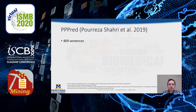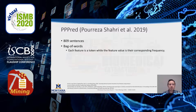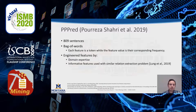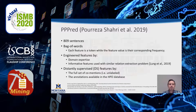We previously implemented PP-PREP, a supervised model for classifying co-mentions of proteins into two classes of good and bad. We manually annotated 809 sentences and used a list of features including bag-of-words features, engineered features by domain expertise, and distantly supervised features from unlabeled co-mentions and HPO database annotations. We observed the dataset was under-representative, but distantly supervised features showed a positive impact.